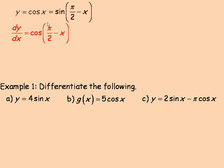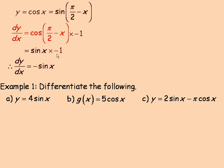Pi over 2 is a constant so its derivative is zero, but differentiating negative x gives negative 1, so we multiply by negative 1. Also, cos(π/2 minus x) equals sine x — that's another trigonometric identity. So we have sine x times negative 1, which gives negative sine x. Therefore the derivative of cos x is negative sine x.